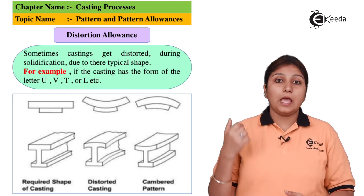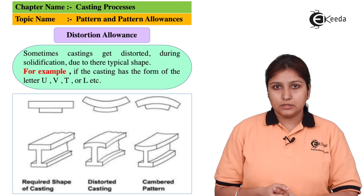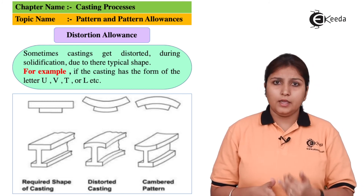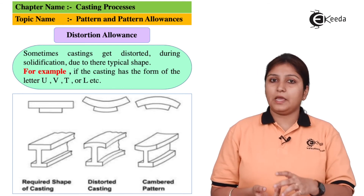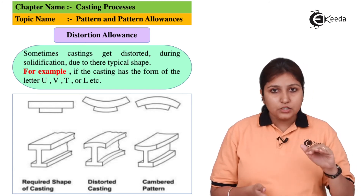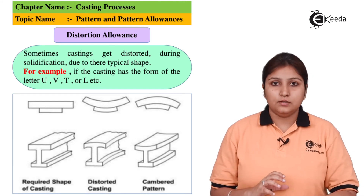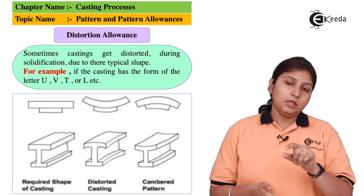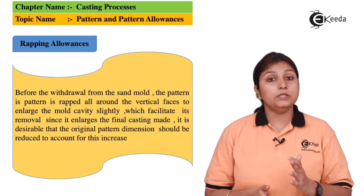The next allowance is distortion allowance. It is generally given in patterns because when the patterns solidify, some deformation occurs. As you can see, the original pattern is there, but the next shape shows deformations — this happens in U-shaped and T-shaped objects. During solidification, it doesn't give you the plain T-shape or U-shape required; it distorts. To prevent that, distortion allowance is given in the pattern itself.